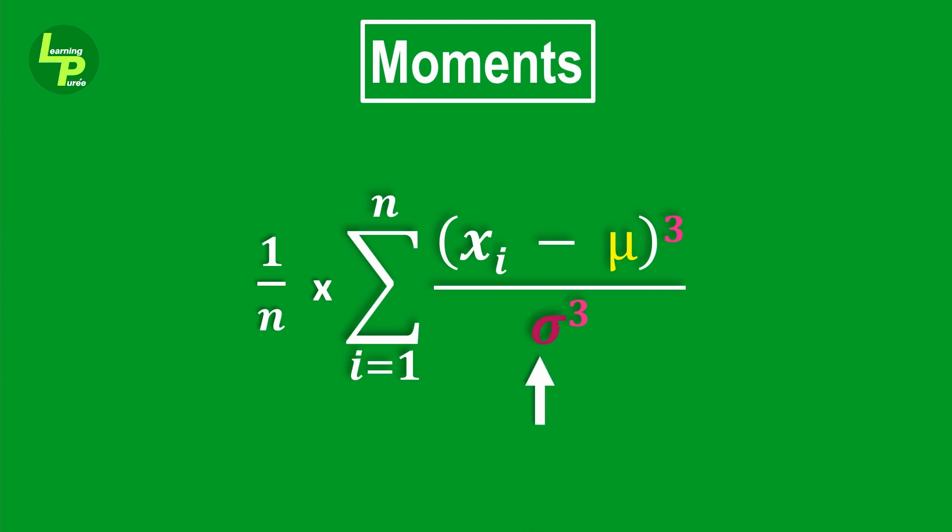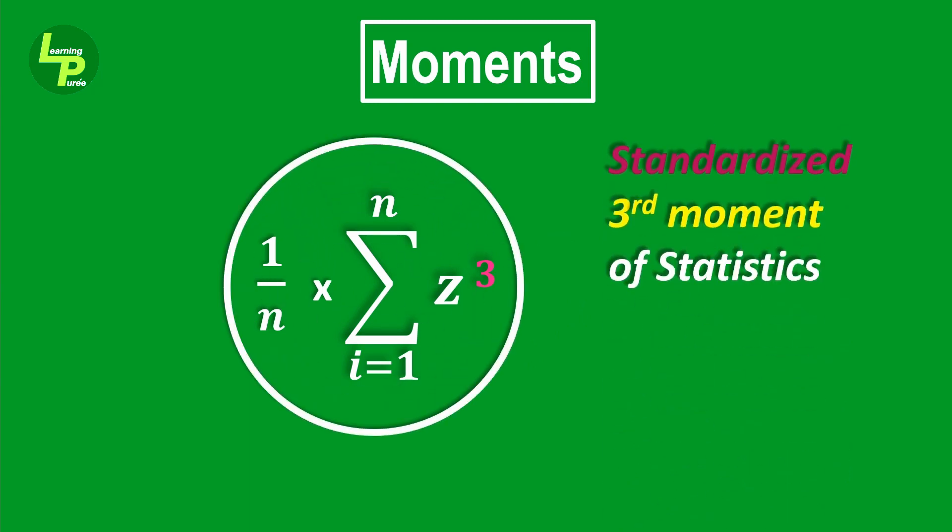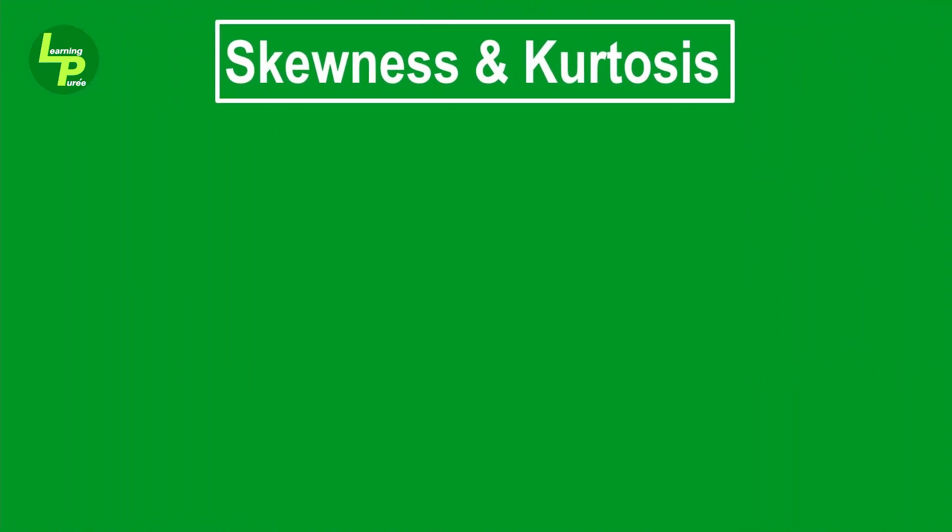This new equation is the standardized third moment of statistics, which also gives us the skewness in the data. Note that skewness and kurtosis, again, are parameters that express the data distribution around the mean. This resembles what we saw with the analogy of the seesaw earlier.